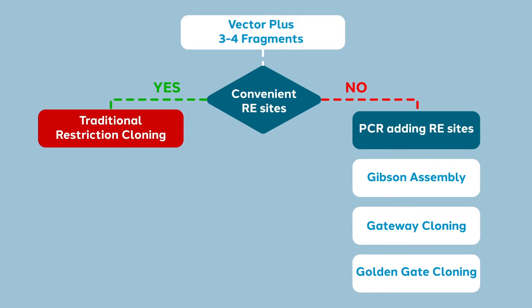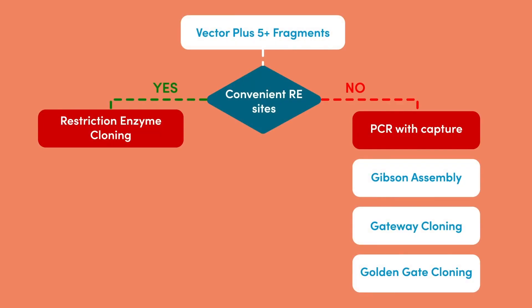As we continue to add more fragments into our desired construct, the choices formally remain the same, but the inefficiency and time constraints of traditional restriction cloning make it generally impractical. Similarly, PCR sewing acquires the same kind of challenges. You can attempt to stitch four or five fragments together in one PCR reaction, but this will be highly inefficient. Or you can stitch your fragments together stepwise, but as long as you continue to amplify even with high-fidelity polymerase, you will be increasing the number of mutations in the population of PCR products. The best choices for large multi-fragment constructs are Gibson assembly, gateway cloning, and golden gate cloning.